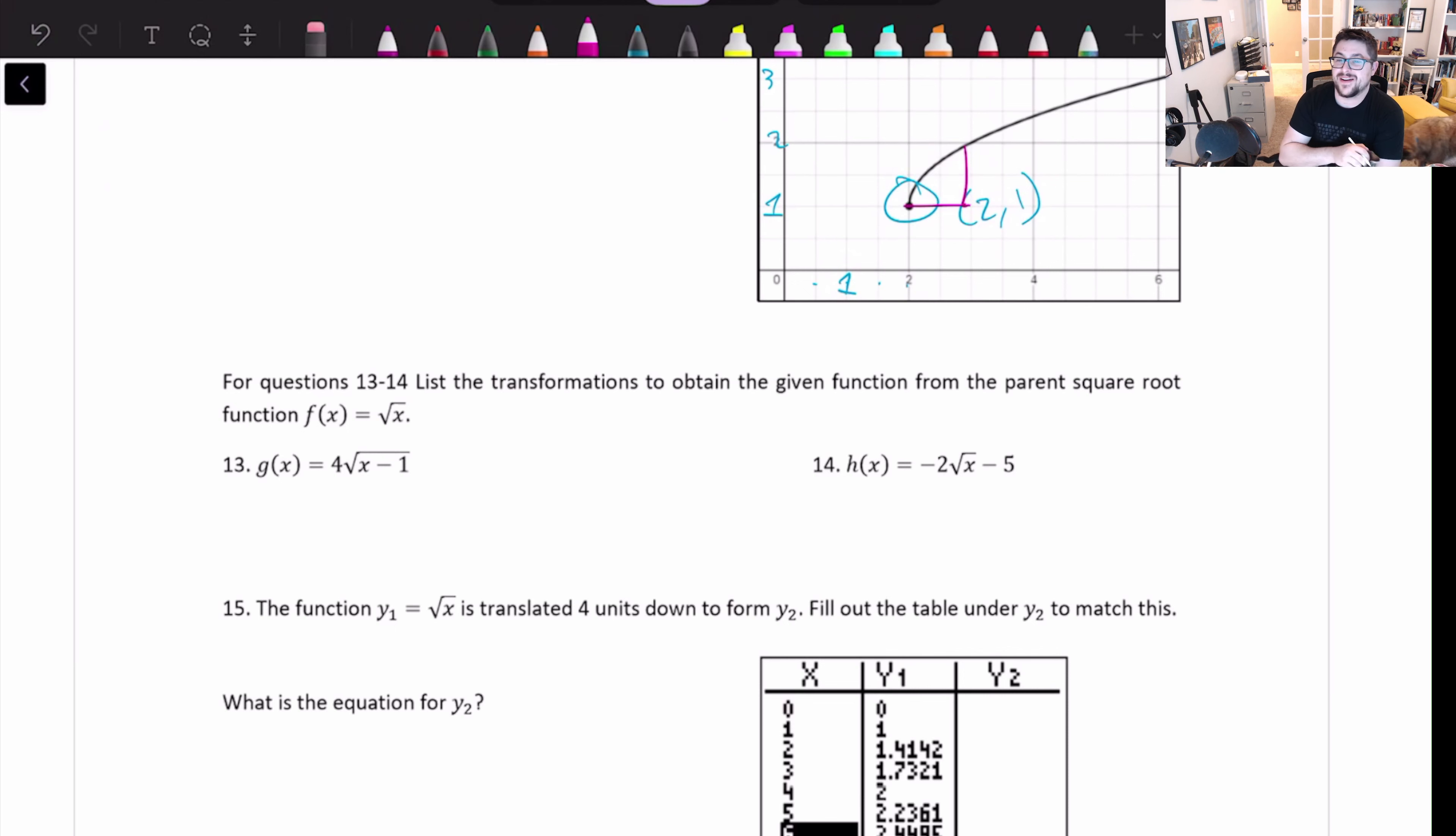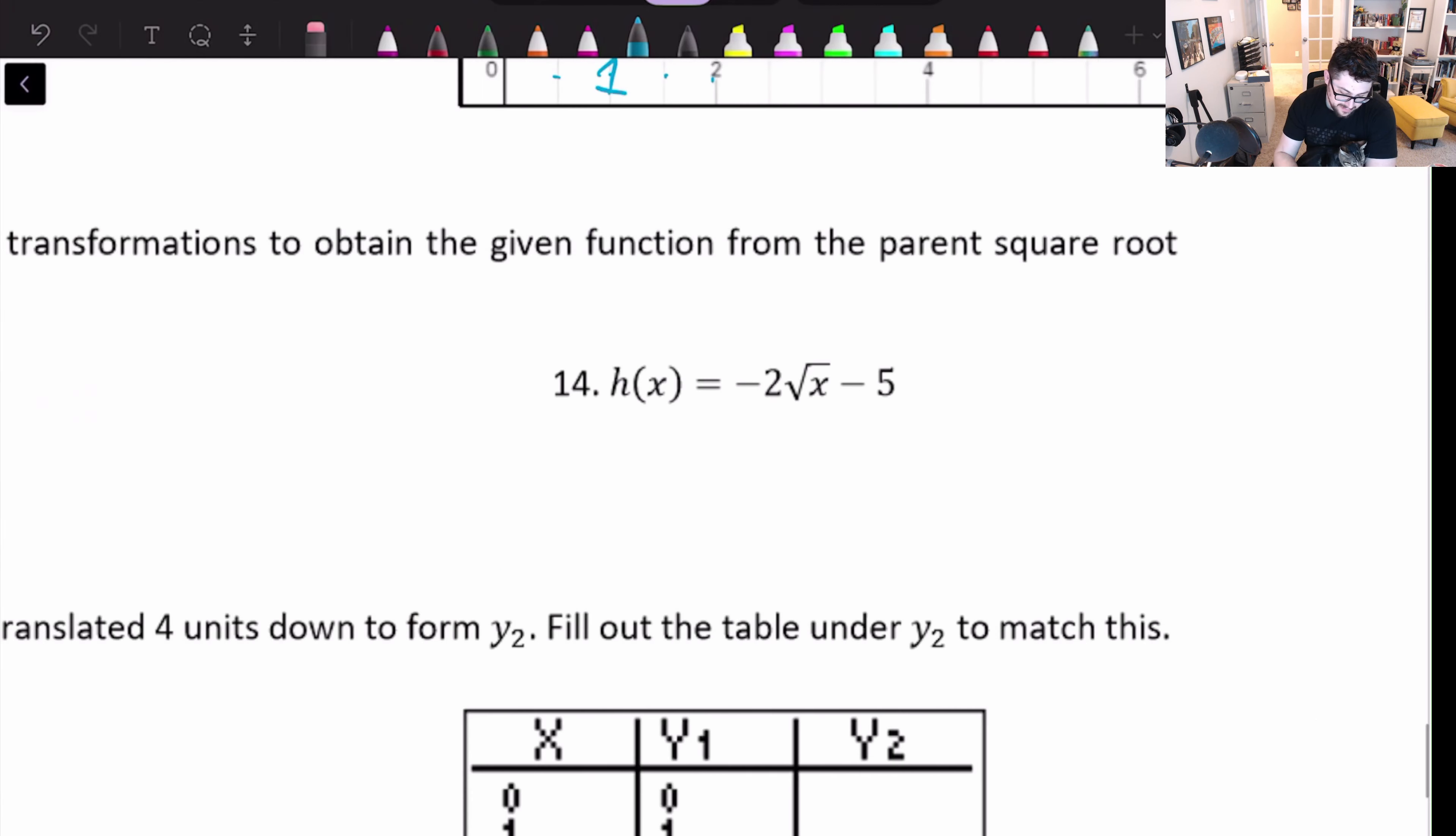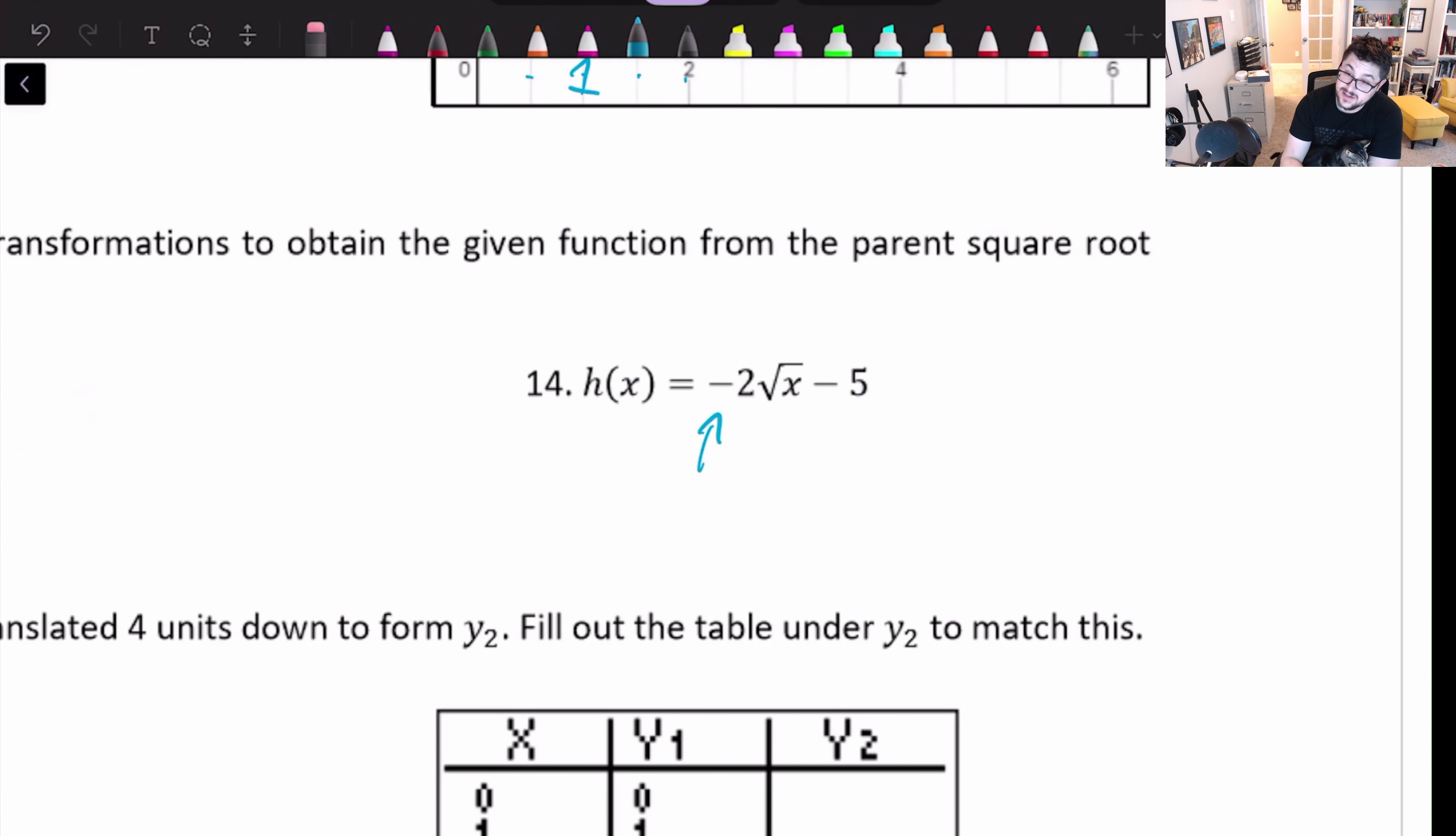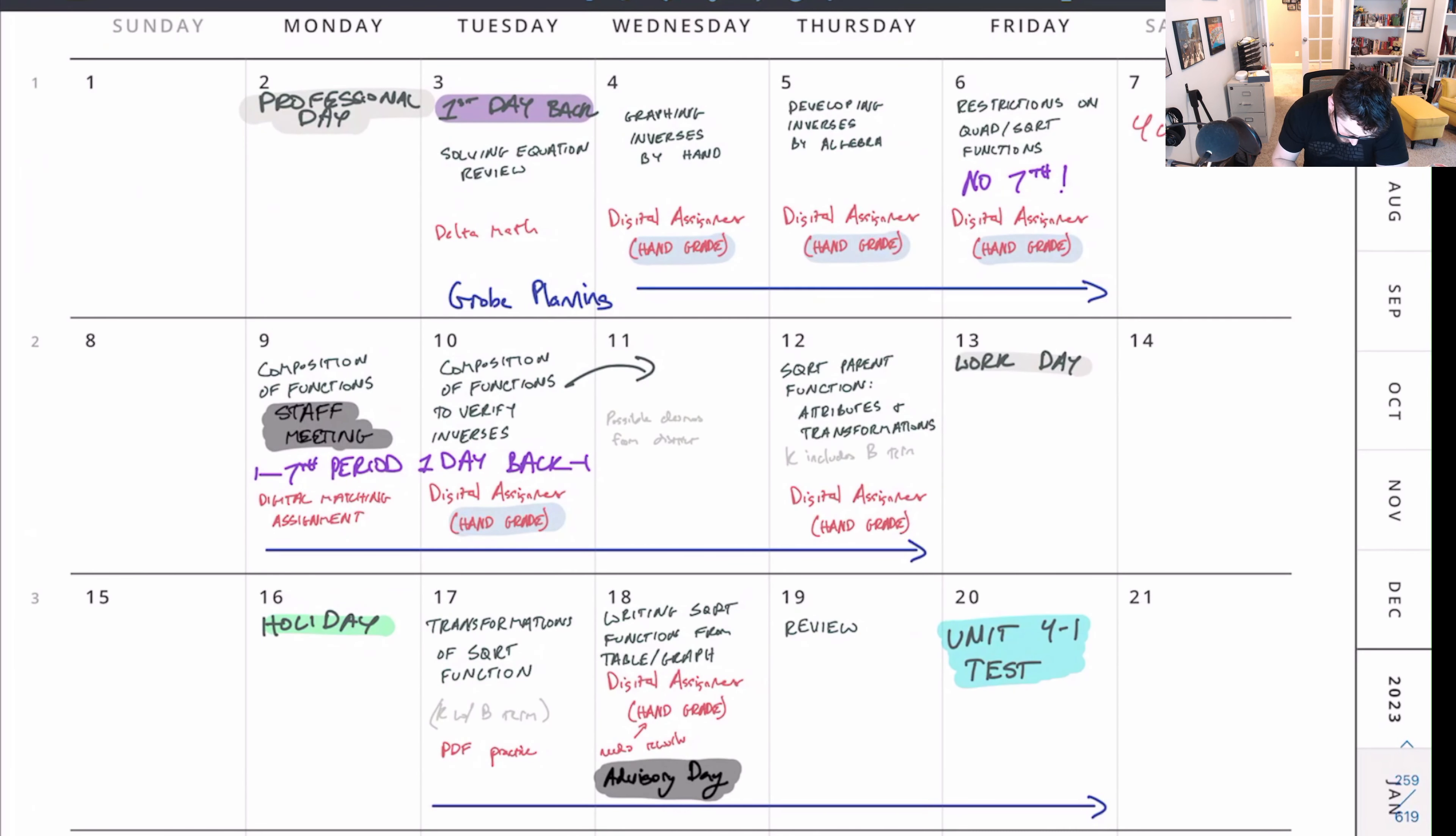Alright. So, let's do the next part. List the transformations to obtain the function from the parent square root function. Okay. So, we're talking about transformations again. So, what we have here is we'll just kind of focus on any numbers or negative signs out front. So, on the first one, we have a 4 out front and we have a minus 1. The 4 is going to vertically stretch. And the minus 1 is going to shift right by a factor of 1, or by 1 unit. On question 14, the negative sign is doing one thing, the 2 is doing another thing, and the minus 5 is doing another thing. So, I would expect three transformations here. Also, if you wanted to go on transformations, we talked about transformations on January 12th. So, I would recommend looking at that.